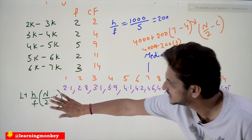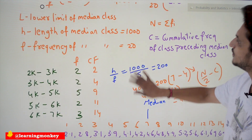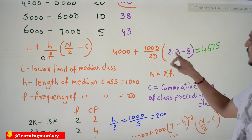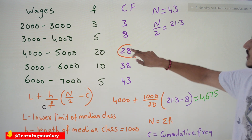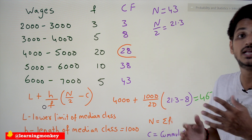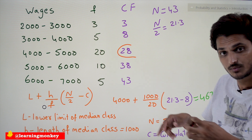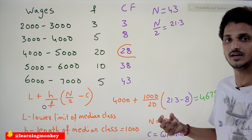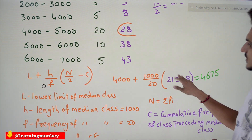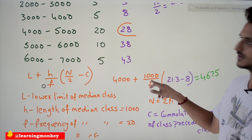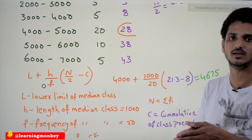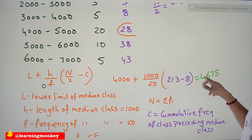Going back to the previous example: n/2 = 21.3, so approximately 22 members should be on the left. 21.3 − 8 = 13.3 members should come from the median class to the left side. Each unit = 1000/20 = 50. So 50 × 13.3 = 665, and 4000 + 665 ≈ 4675. That's why we got 4675.